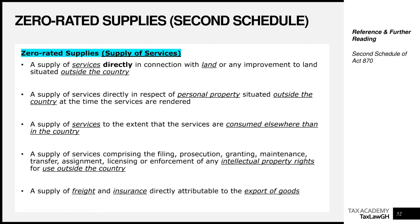The next is a supply of services directly in respect of personal property situated outside Ghana at the time you provide the service — so services linked to personal property outside Ghana are also zero-rated. There is also a general blanket principle: a supply of services to the extent that the services are consumed elsewhere than in Ghana. For example, if I'm providing consulting or advisory services to someone in Germany and that person will consume the service in Germany, I will zero-rate the supply from the Ghanaian perspective.